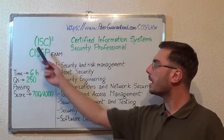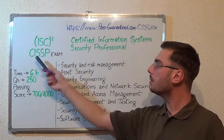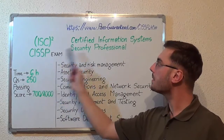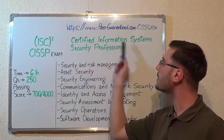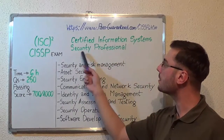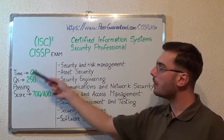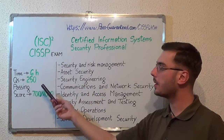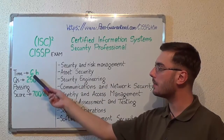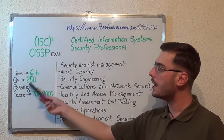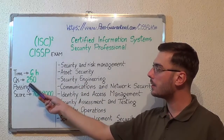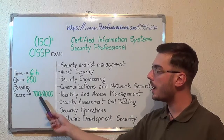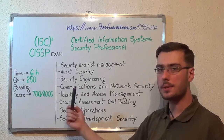Hello everyone. Today I present you the ISC2 CISSP exam — Certified Information Systems Security Professional. Here you have some basic test information: the duration of this exam is 6 hours, there are 250 questions, and the minimum passing score is 700 out of 1000.